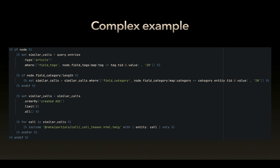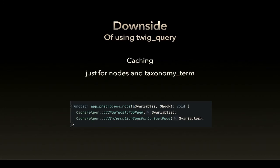What's the downside? The downside of using this module is caching. Of course you have to set your own cache tags. Like I did here — and this is one of the very few occasions when I use preprocess functions: to set cache tags or cache contexts.